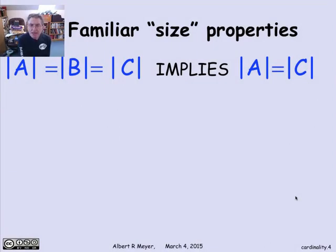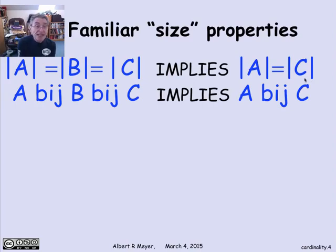So now let's examine the standard size properties that you'd expect if these relationships of Surge and Byge behaved like relationships between sizes. So one basic property that finite sizes have is that if A is equal to B and B is equal to C in size, then the size of A and the size of C are the same. That's certainly true for finite sets. Does it hold for infinite sets where now equality is going to be replaced by Byge? Well, we have to check it. Is it true that if A Byge B and B Byge C implies A Byge C?